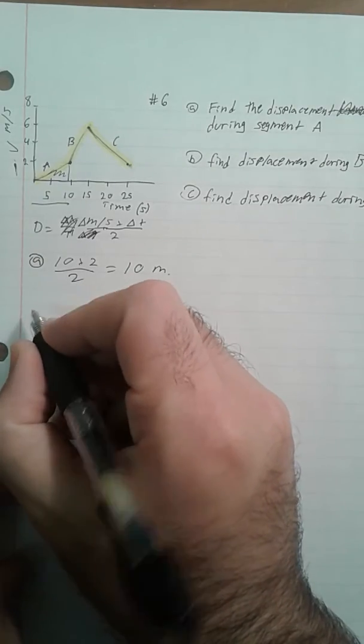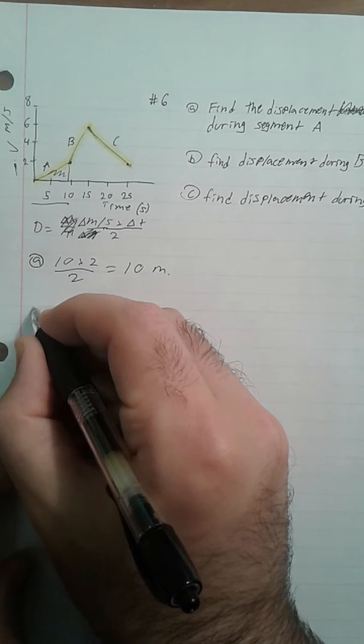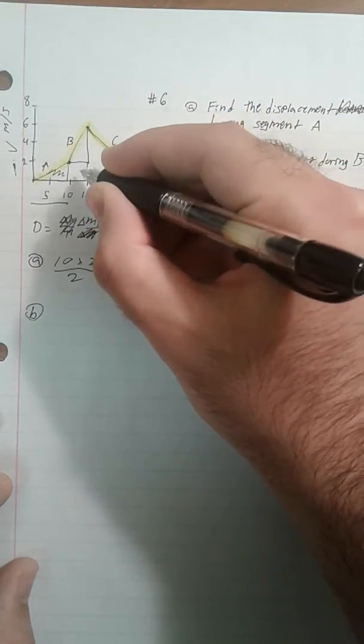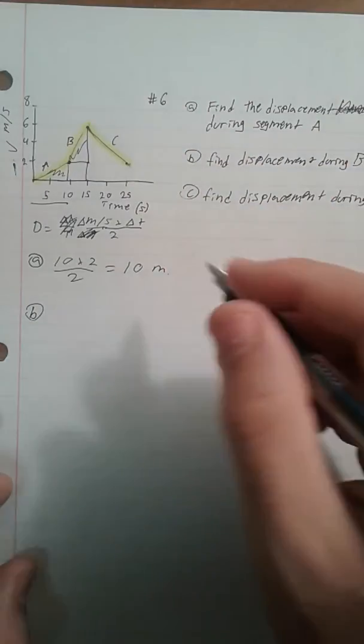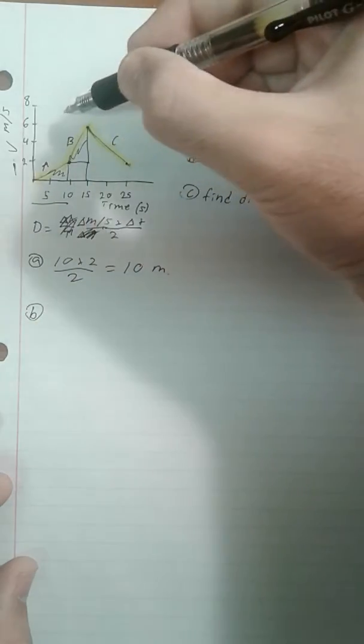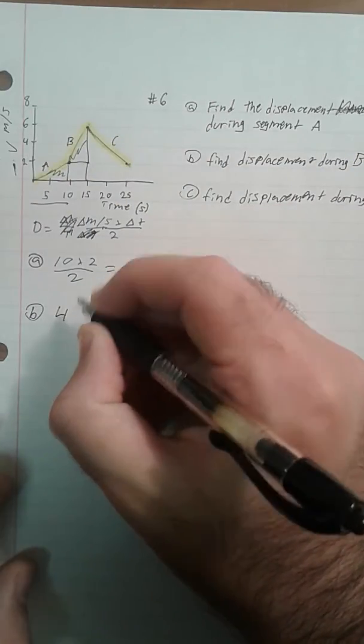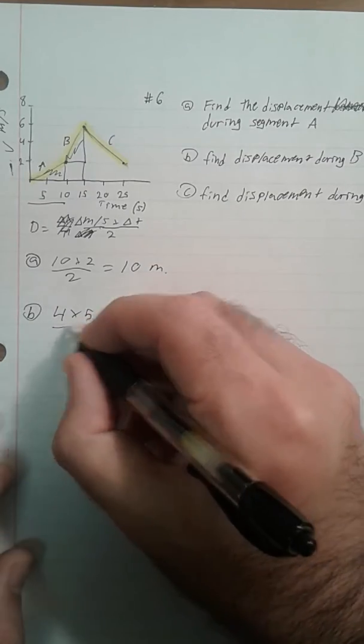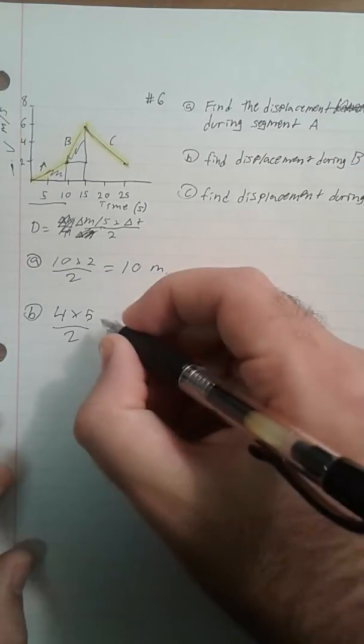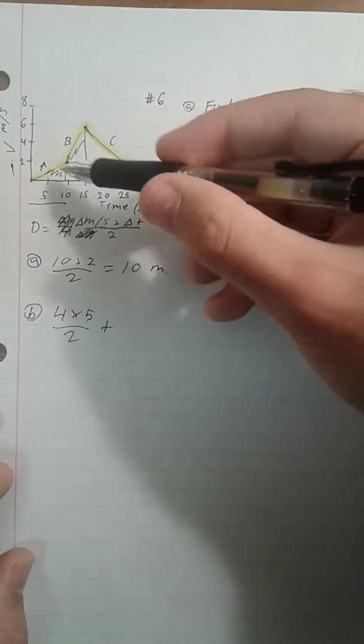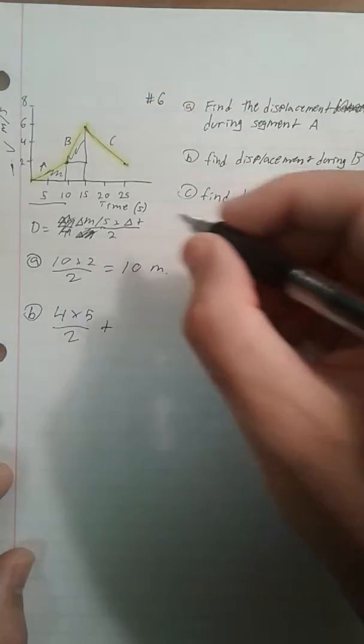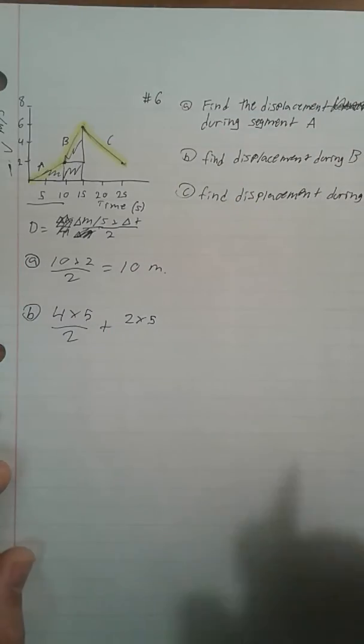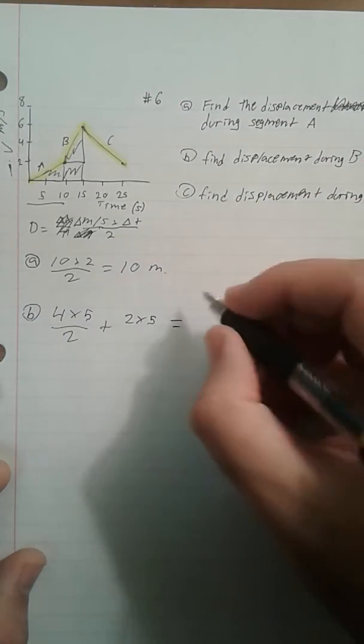For B, it's a little bit different. First I have to get this, and then I have to get this little box. So up here, it's the change in the meters per second, which is 4, times the change in time, which is 5, and that over 2 again because it's a triangle. Plus, you take 2, the 2 meters per second, times another 5. Plus I have to get this region, and that equals 20 meters.